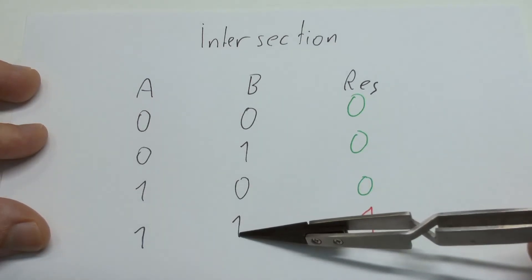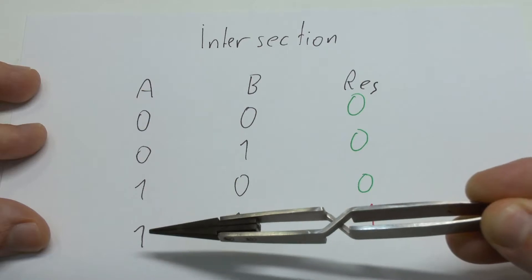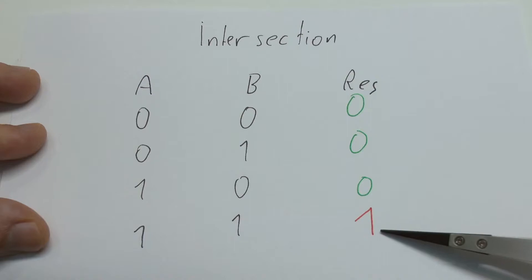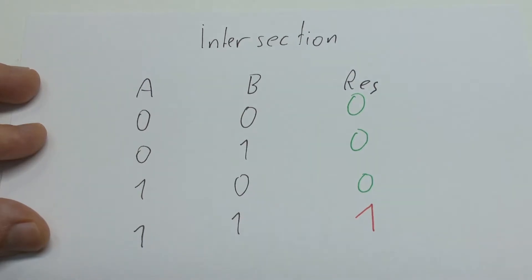Because now only if the printable area and the object model both declare a point as relevant will it be relevant in the final output.